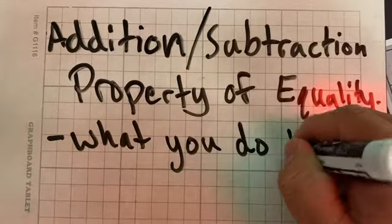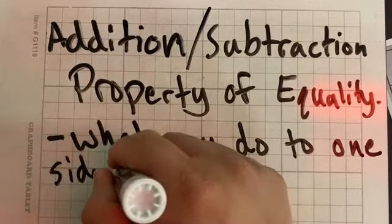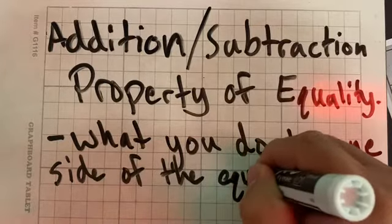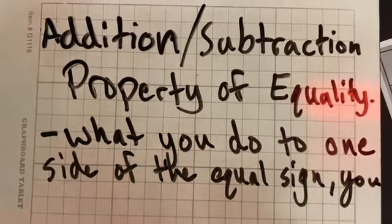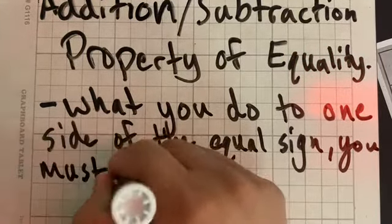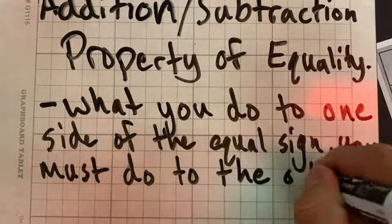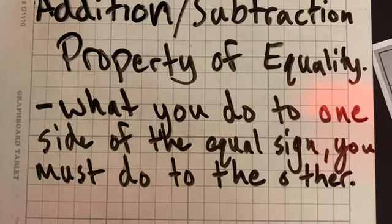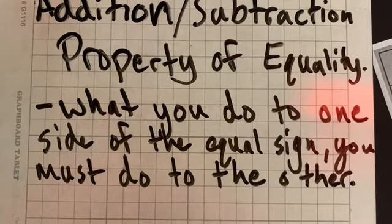So in the simplest way of saying it, what you do to one side of the equal sign you must do to the other. So for example, if I need to add three to the left side of the equal sign, well, since I added three to the left side I need to go and add three to the right side to keep them equal, to keep them equivalent. So that's what these properties are saying. For example, if I subtract five from one side, the subtraction property of equality tells me that I need to go and subtract the same number on the other side. That is what we are doing.